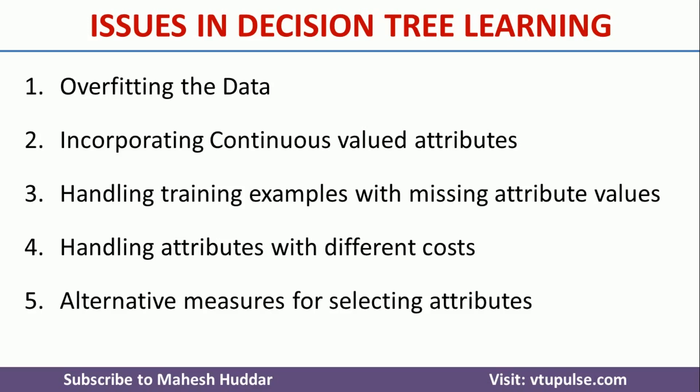That is a kind of bias in decision tree learning. To avoid that particular thing, are there any other measures we can use for selecting the attributes? That is another issue in decision tree learning.